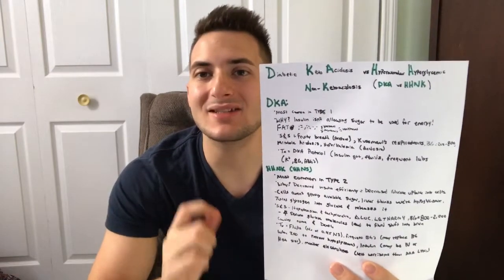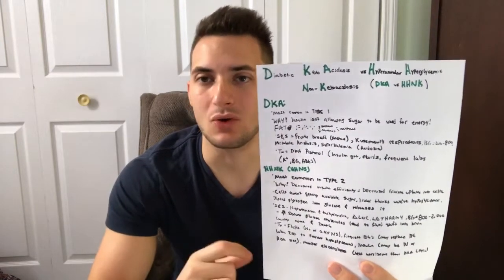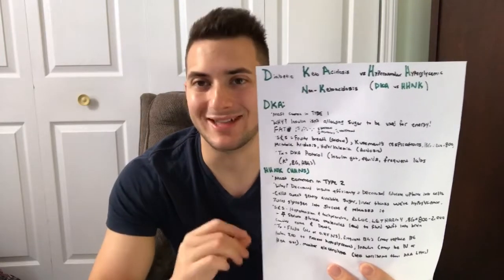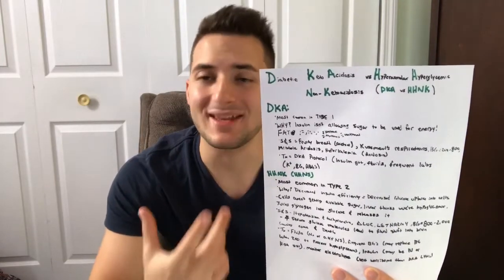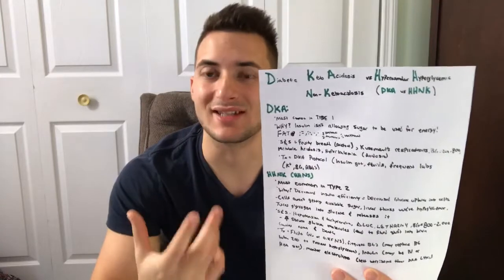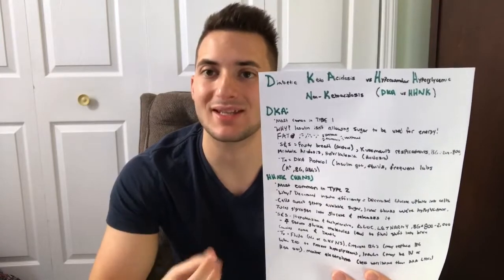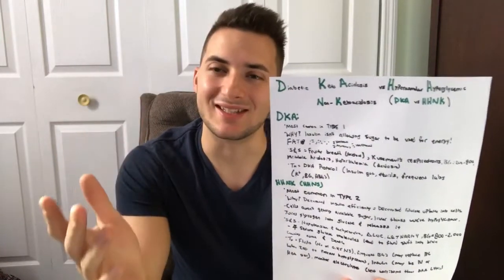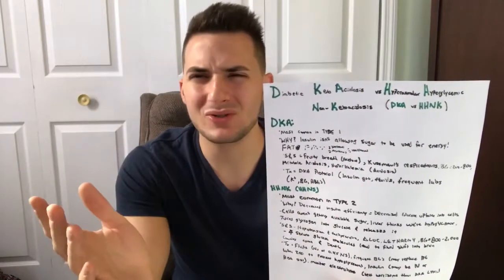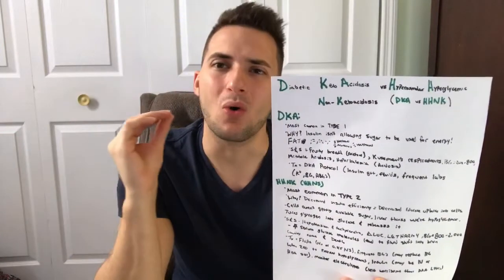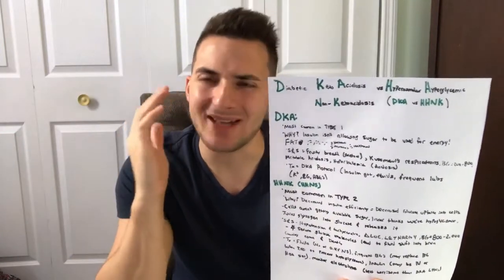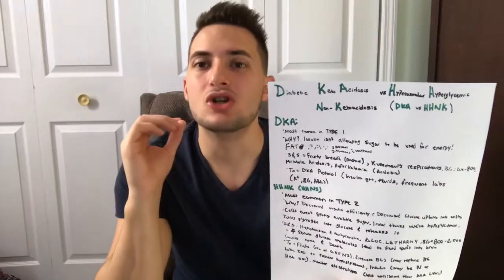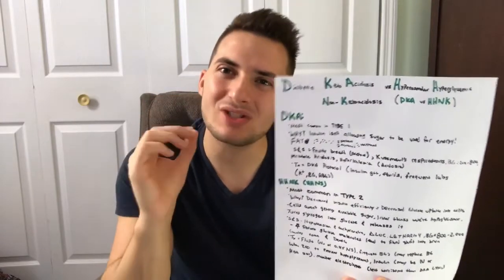DKA — diabetic ketoacidosis — is frequently found in type 1 diabetics. Why? Because type 1 diabetics are not producing insulin, or if they are producing insulin, it's a negligible amount. So in my head I just consider them as not producing insulin. So if they're not producing insulin...